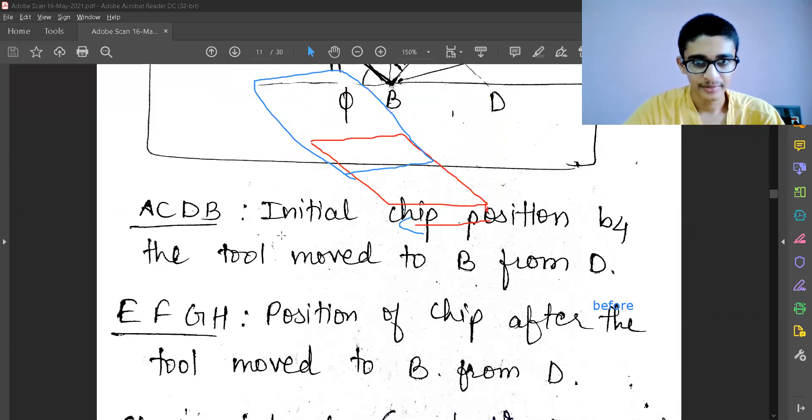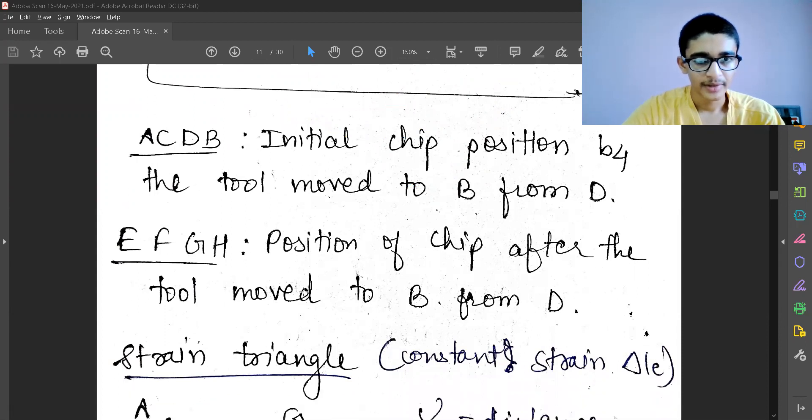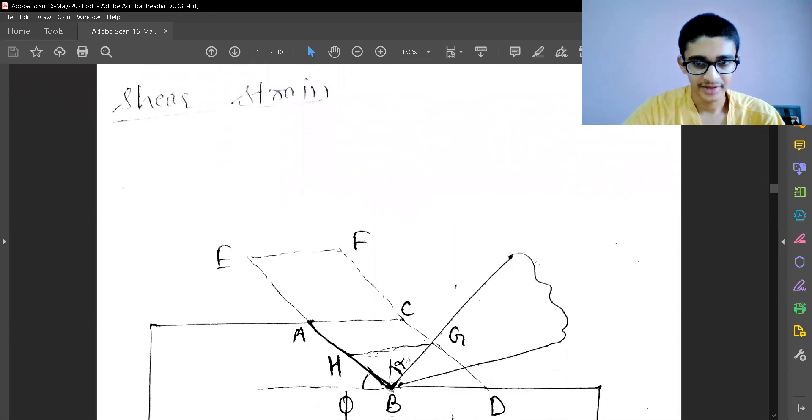Now, EFGH is the position of the chip after the tool has moved to B from D. I have shown EFGH here.